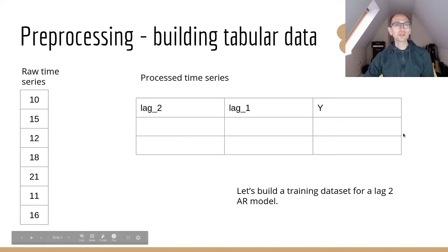Let's have a go at pre-processing some data. We're going to build an auto regressive model and we're going to build a training data set for a lag two model initially. So here's our raw time series data, just really simple: 10, 15, 12, 18, 21, 11 and 16. What we're going to do is run a sliding window across that data and convert it to a processed tabular data set.